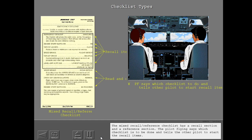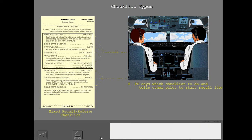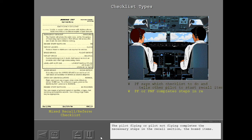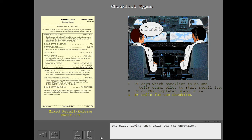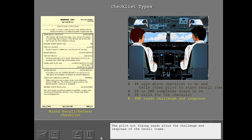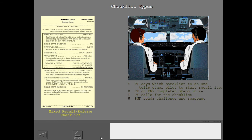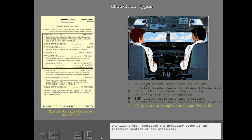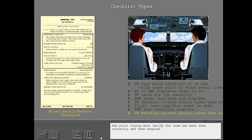The mixed recall reference checklist has a recall section and a reference section. The pilot flying says which checklist is to be done and tells the other pilot to start the recall items. The pilot flying or pilot not flying completes the necessary steps in the recall section — the boxed items. The pilot flying then calls for the checklist. The pilot not flying reads aloud the challenge and response of the recall items, and the pilot flying must verify the item has been done correctly and then respond. The flight crew then completes the necessary steps of the reference section. After each checklist item is accomplished, the pilot not flying says the checklist response, and the pilot flying verifies and responds.